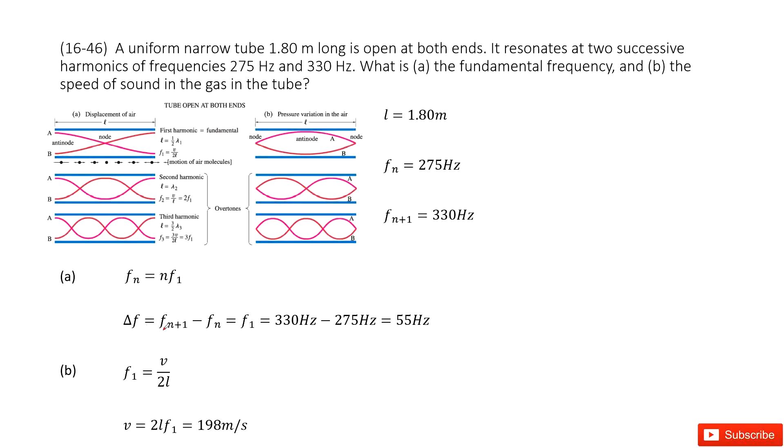The difference between these two continuous frequencies is F1, right? And then this F1, you can say Fn plus 1 minus Fn, 330 minus 275, equals 55 Hz.